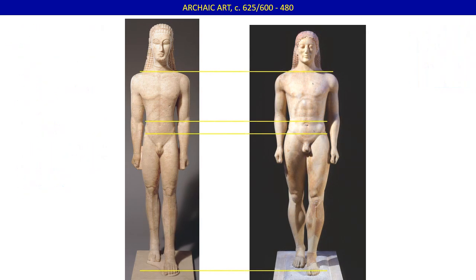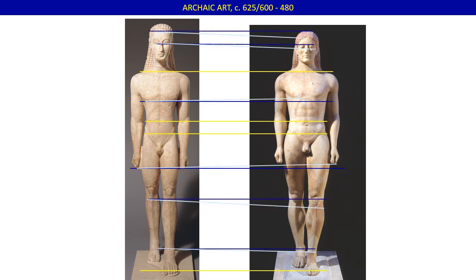This slide compares the proportions of the earlier and later Kouroi bodies. The parallel lines show where different parts of the body fall on the two images. The proportions of the Anavisos Kouros are clearly more accurate with regard to reality, and the oversized head of the New York Kouros is much more noticeable. The dark blue lines are parallel lines, while the lighter blue lines match body parts between the two statues and slant up or down. For example, the top of the New York Kouros' forehead is much higher than that of the Anavisos Kouros, as are his eyes. His knees are much higher, making his shins too long compared to his thighs.